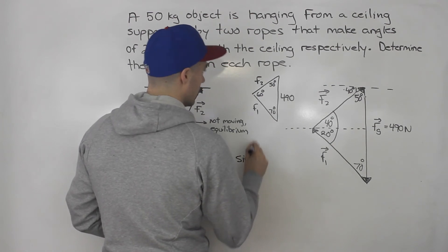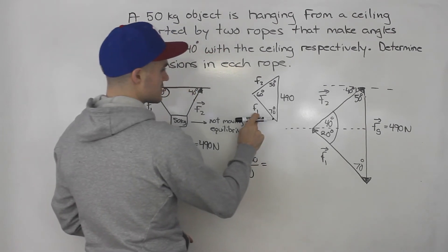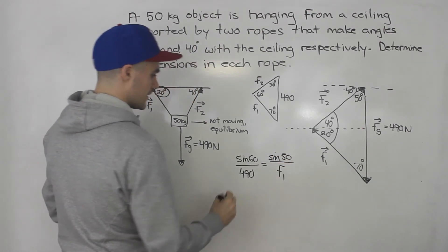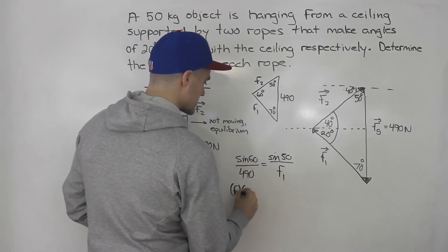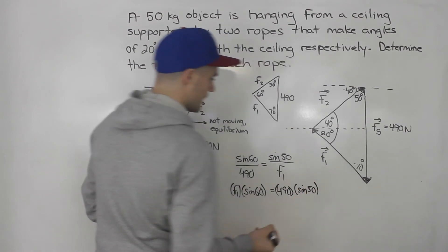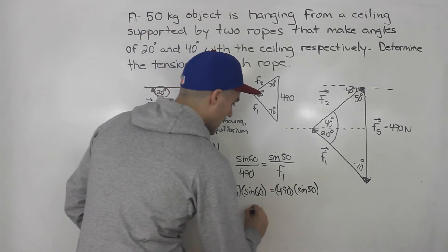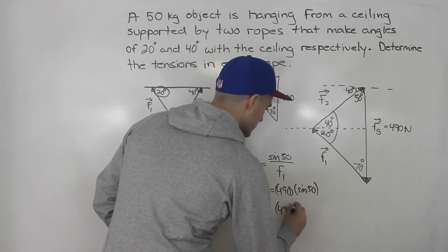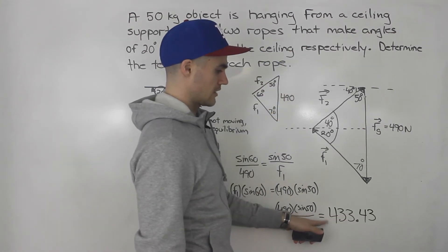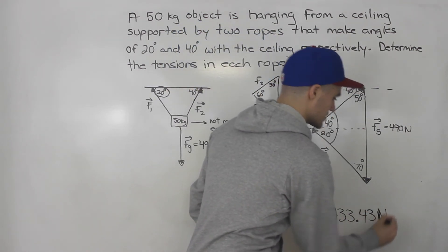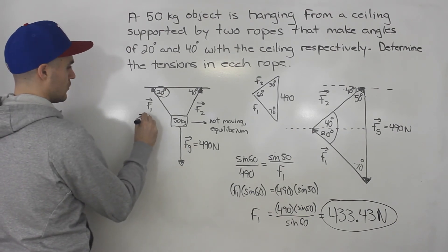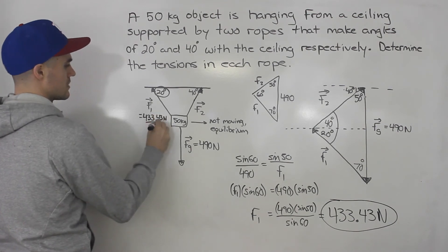So we can say sine of 60 over 490 equals — let's solve for F1 first — sine of 50 (the angle opposite to F1) all over F1. We can cross multiply: F1 times sine of 60 equals 490 times sine of 50. Now isolate for F1 by dividing both sides by sine of 60. So F1 is 490 times sine of 50 all over sine of 60. When you do that in your calculator, you end up getting 433.43 newtons. So that's the tension of this rope — F1 is 433.43 newtons. That is one of the answers.